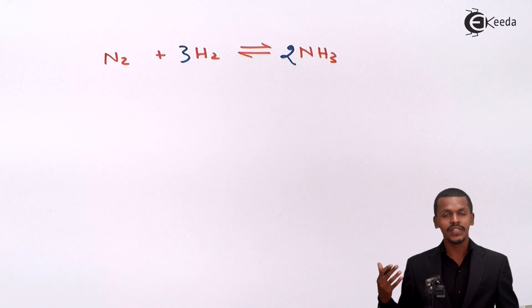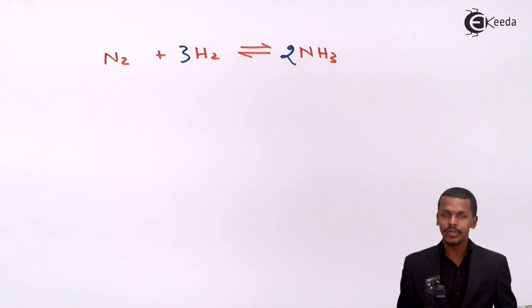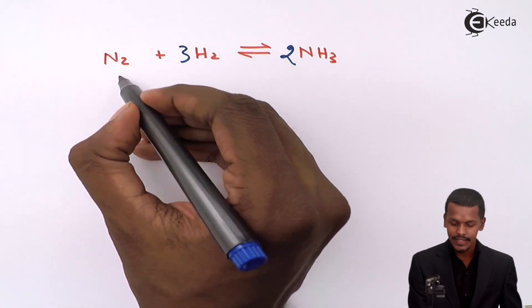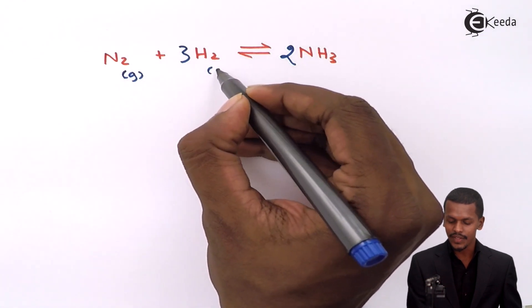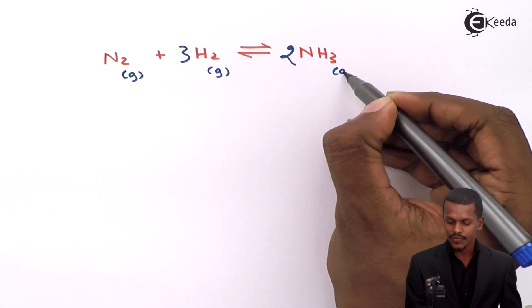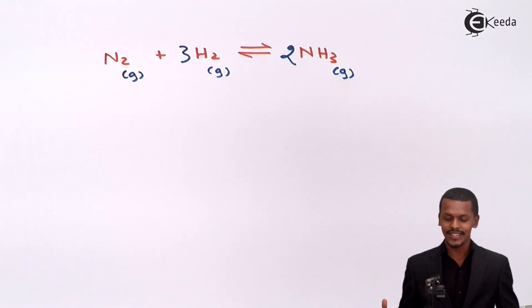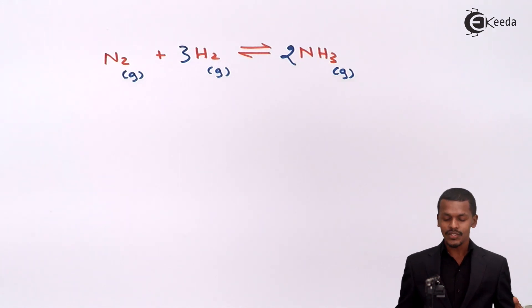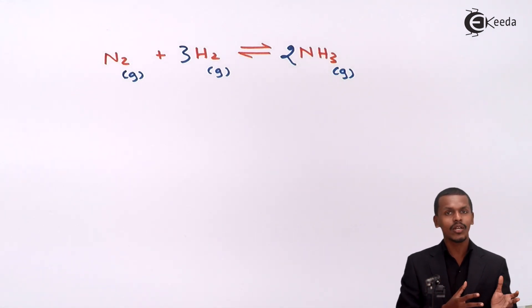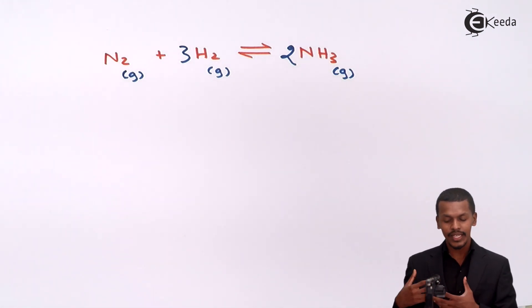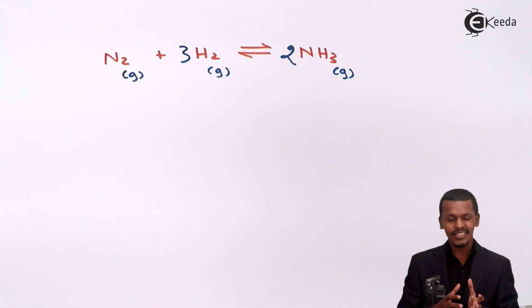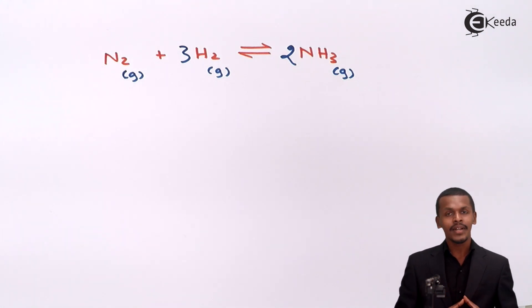The physical state is also required. Nitrogen is in the gaseous phase, hydrogen is also gaseous, and ammonia is also gaseous — making this a homogeneous reaction. This is not a physical equilibrium because nitrogen and hydrogen are reacting with each other to give a different substance; that is a chemical reaction.